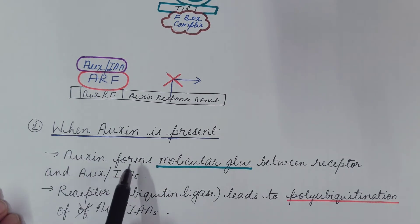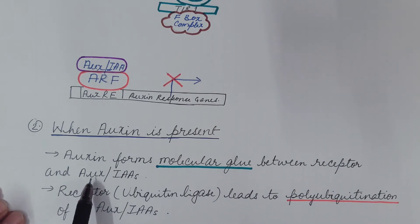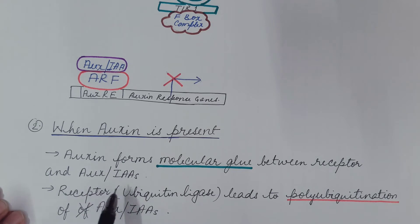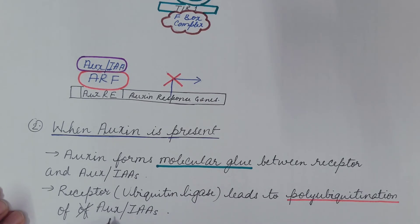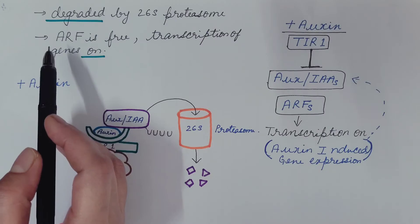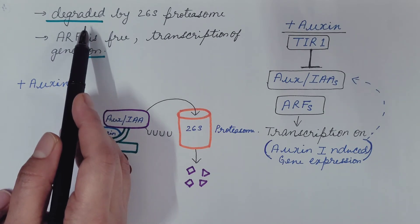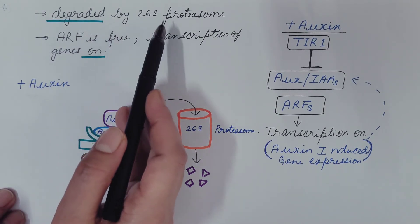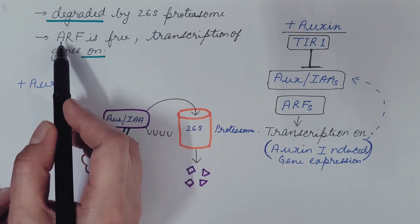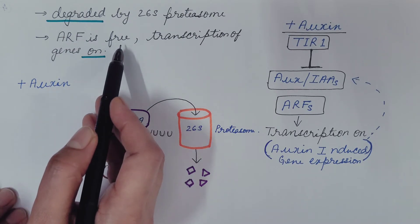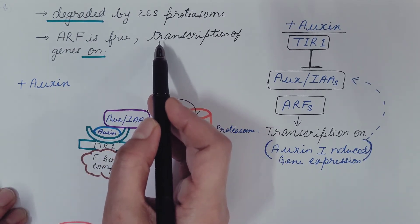The second situation is when auxin is present. Auxin forms a molecular glue between the receptor and the inhibitor AUX/IAA. The receptor also acts as a ubiquitin ligase and leads to polyubiquitination of the inhibitor AUX/IAA. Once the inhibitor is tagged with polyubiquitin, it is degraded by the 26S proteasome.